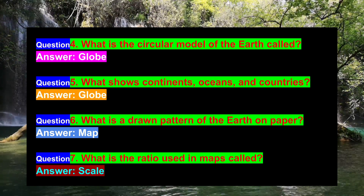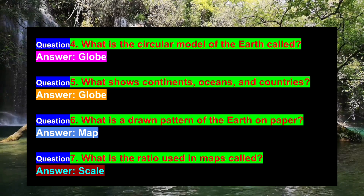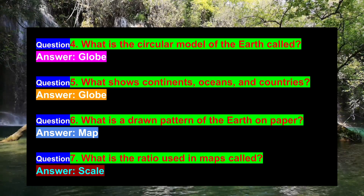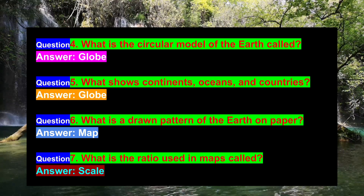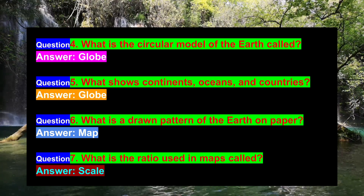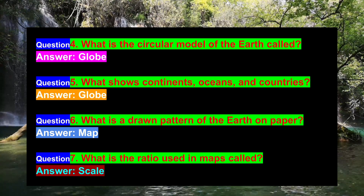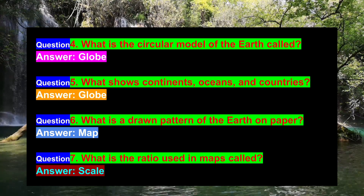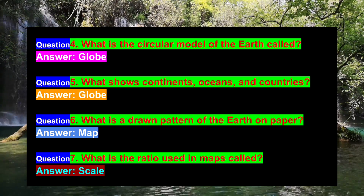Question 5: What shows continents, oceans, and countries? Answer: Globe. Question 6: What is a drawn pattern of the Earth on paper? Answer: Map.